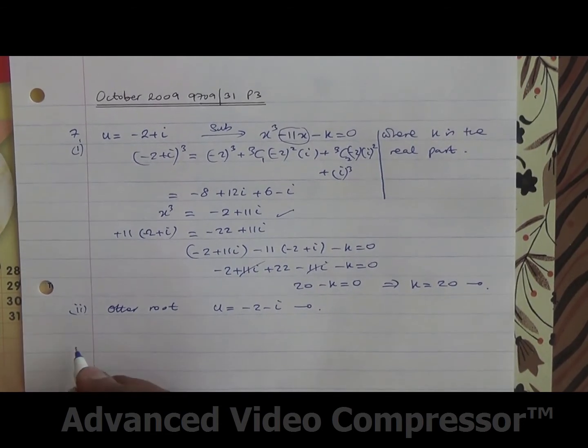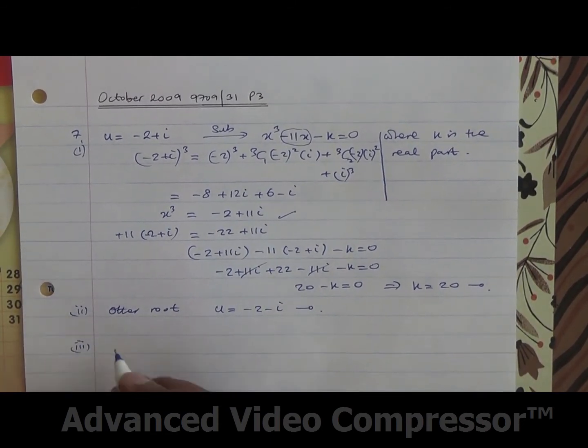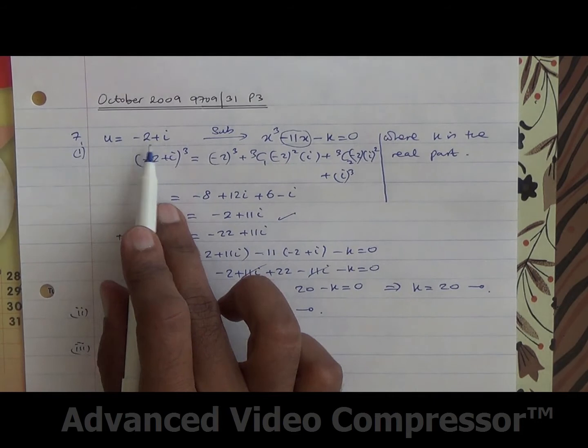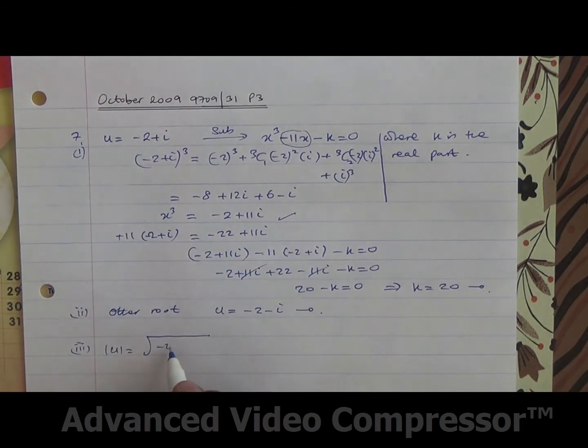For the third part, we need to find the mod of u and also the argument of u. So mod of u is going to be minus 2 squared, 1 squared. And you do the square root of that, that ends up to be the square root of 5. So here we are, nothing difficult.